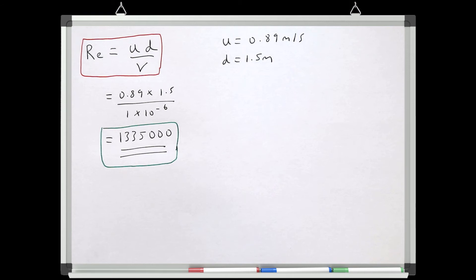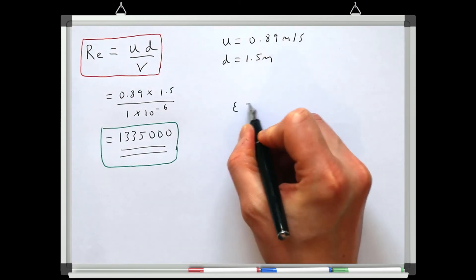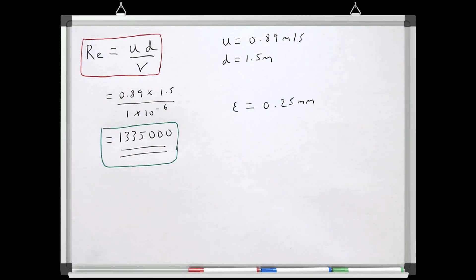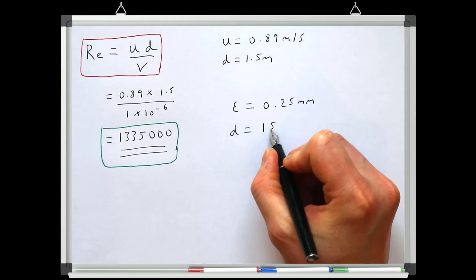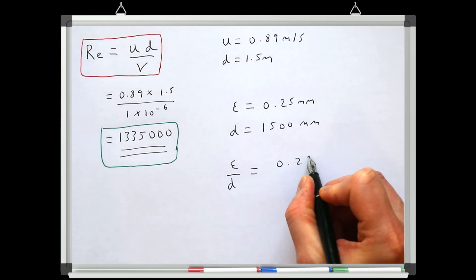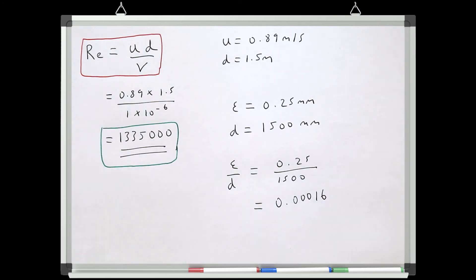But I've made an estimate of the roughness of the pipe in this system as 0.25 millimeters, which seems like a reasonable estimate for the type of materials used in systems like this. And if we divide that by the pipe's diameter, we get the relative roughness as 0.00016.